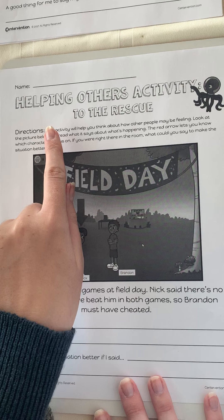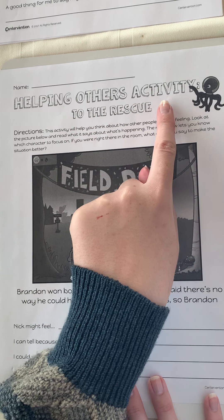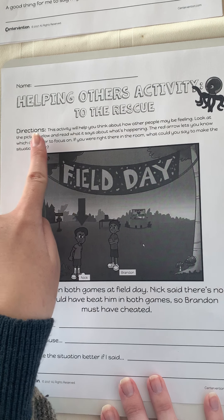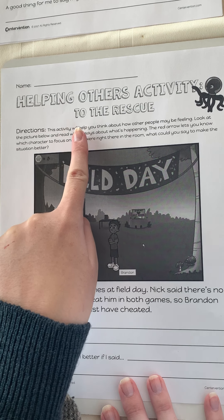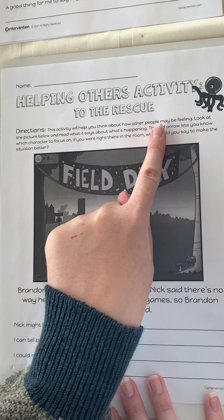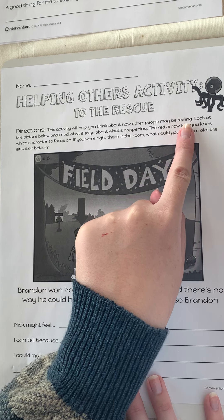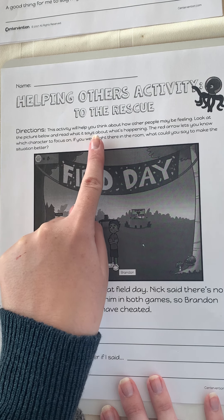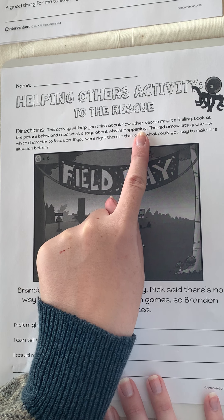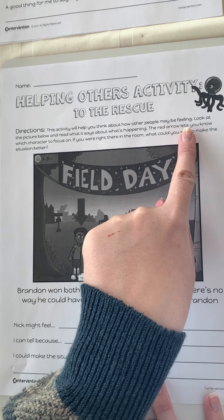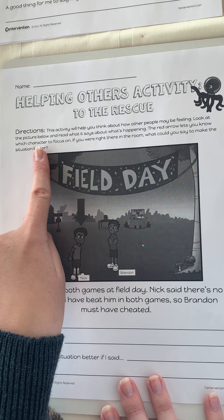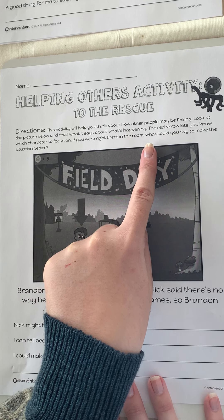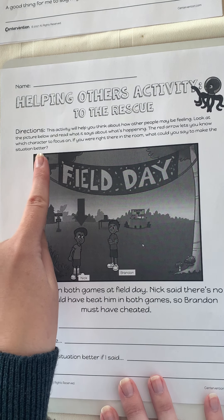This worksheet says 'Helping Others: Activity to the Rescue.' The directions read: this activity will help you think about how other people may be feeling. Look at the picture below and read what it says about what is happening. The red arrow lets you know which character to focus on. If you were right there in the room, what could you say to make the situation better?